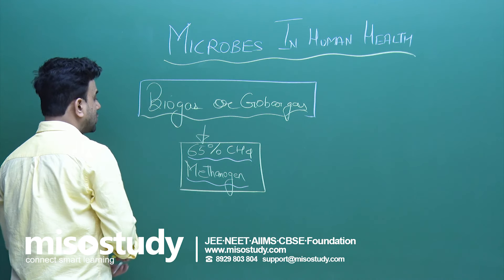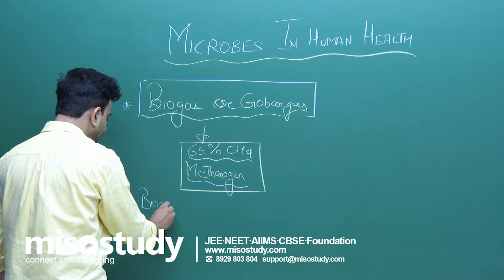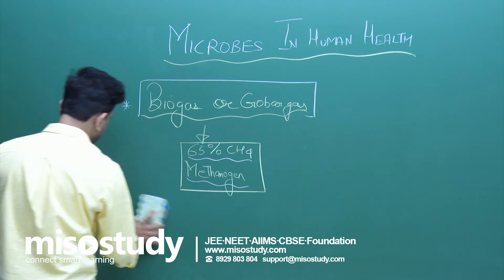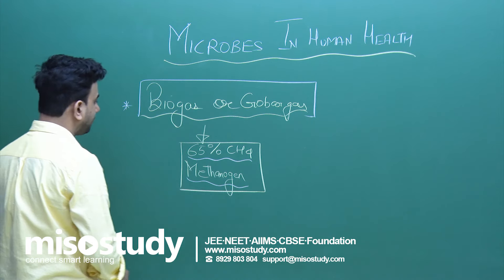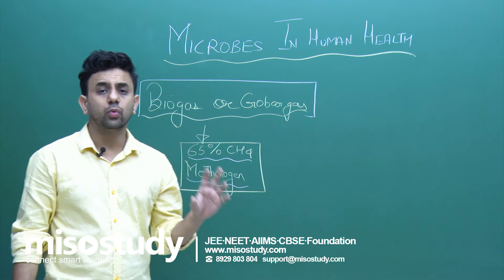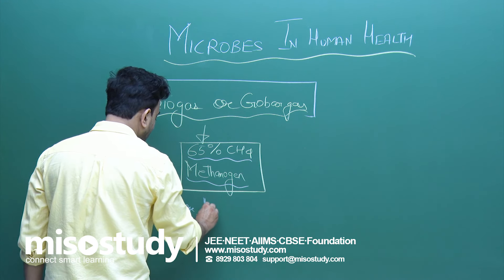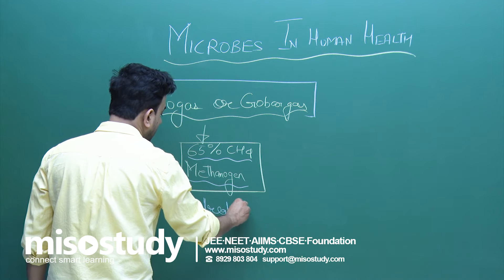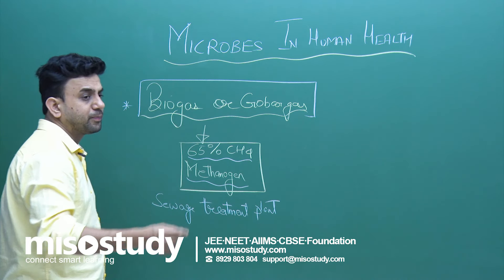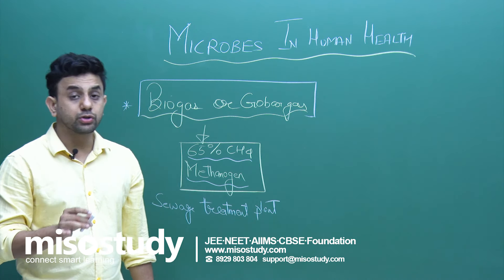We also talked about the sewage treatment plant — the Yamuna plan, the Ganges plan and so on — where sewage is treated before dumping the polluted water into the main river bodies. Today we are going to talk about biocontrol.